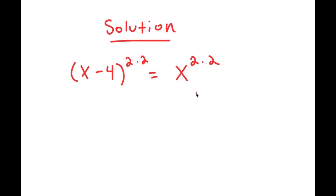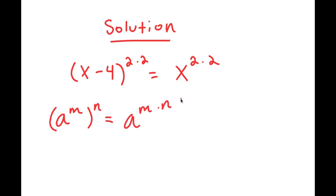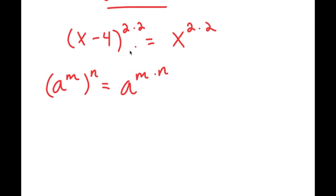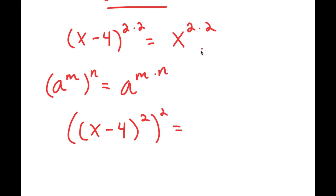The reason I did this is because now I can use the property: a to the power of m to the power of n is equal to a to the power of m times n. Using this property, I can rewrite (x minus 4) to the power of 2 times 2 as (x minus 4) squared to the power of 2, and x to the power of 2 times 2 as x squared to the power of 2.